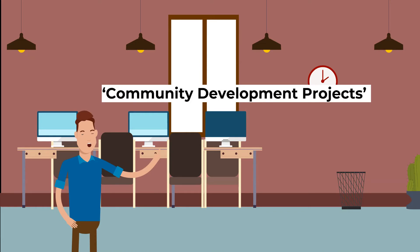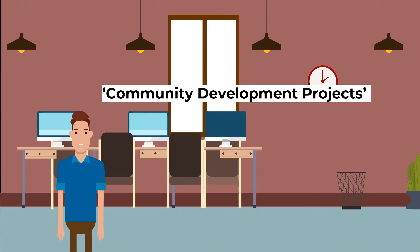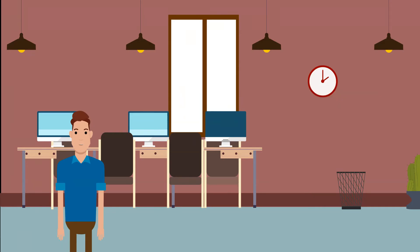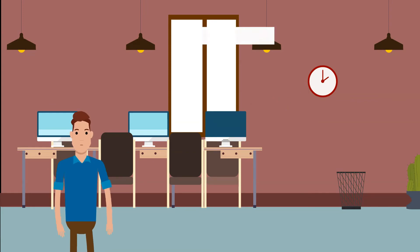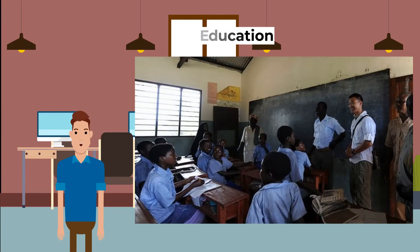Thirdly, community development projects. Many local hotels, safari lodges, and camps have set up their own community development projects, supporting the local community by helping to build homes, infrastructure, wells, water supplies, telecommunications, and electricity. Many are also involved in improving healthcare for local communities, working closely with doctors and health organizations. Lastly, some organizations support local schools, ensuring they are provided with all necessary provisions and encouraging students to attend.